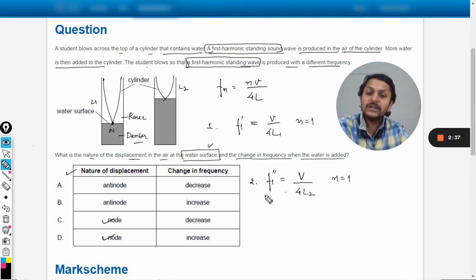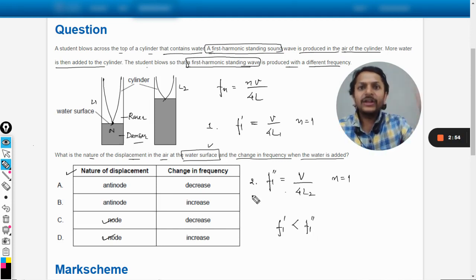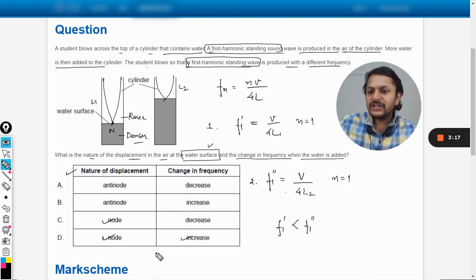What can we say about f1 and f1 double dash? L1 is more, so we are dividing v by 4 with a bigger amount. So f1 dash becomes lesser. Wait, I'm wrong—frequency increases. Yes, my mistake. L2 is lesser, so the frequency is more. So f1 double dash is more than f1 dash. It means the frequency has increased. The answer will be D.